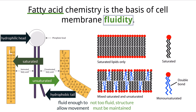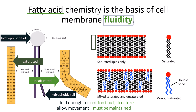If each carbon atom is connected with a single bond in the fatty acid chain, then it can be saturated with hydrogen atoms to fill the remaining two bonds that carbon can make. This results in a straight fatty acid chain which can be packed together tightly, making the cell membrane more rigid and less permeable to simple diffusion.